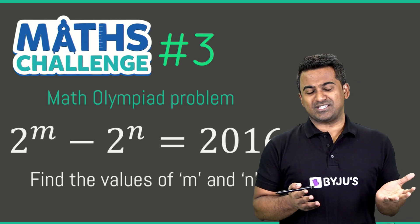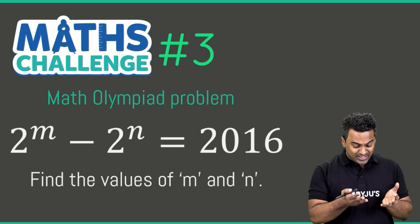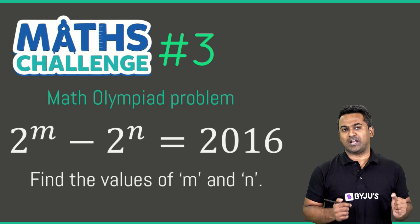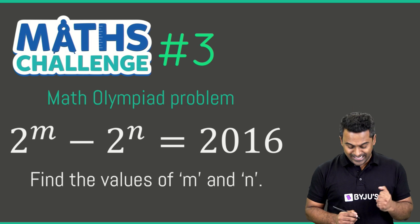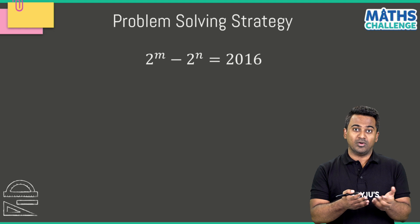When you look at this equation it looks fairly simple. All you're given is 2^m - 2^n = 2016 and you've been asked to figure out the values of m and n. The first thought that may pop up in your head is you could simply substitute some values of m and n.